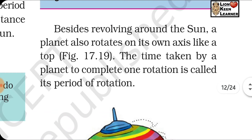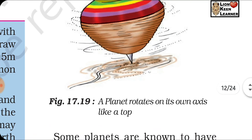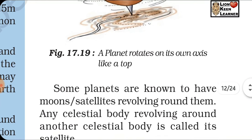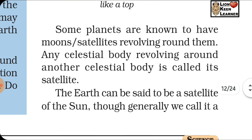Besides revolving around the sun, a planet also rotates on its own axis like a top. The time taken by a planet to complete one rotation is called its period of rotation. Just like a top, planets rotate in place. Earth's day and night are formed only because of the rotation of the Earth.